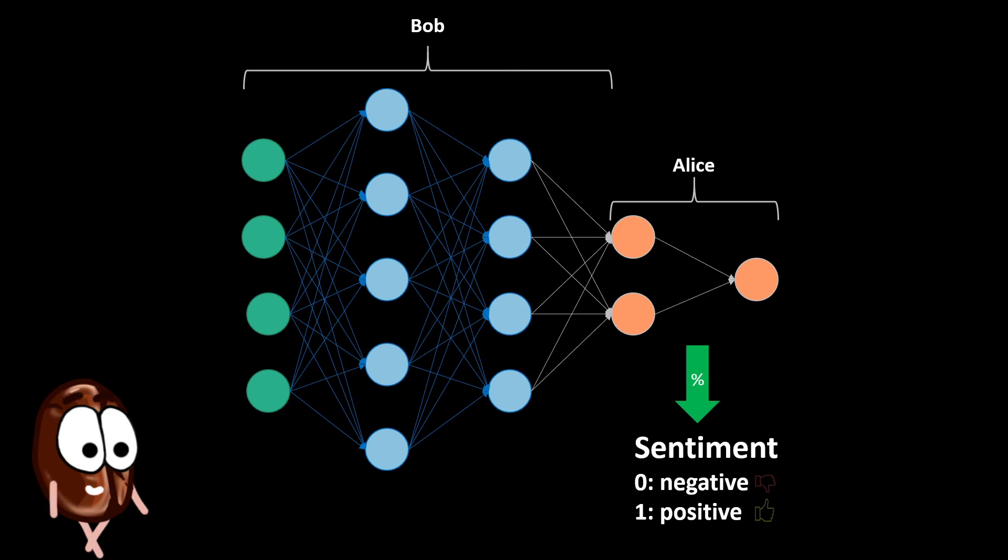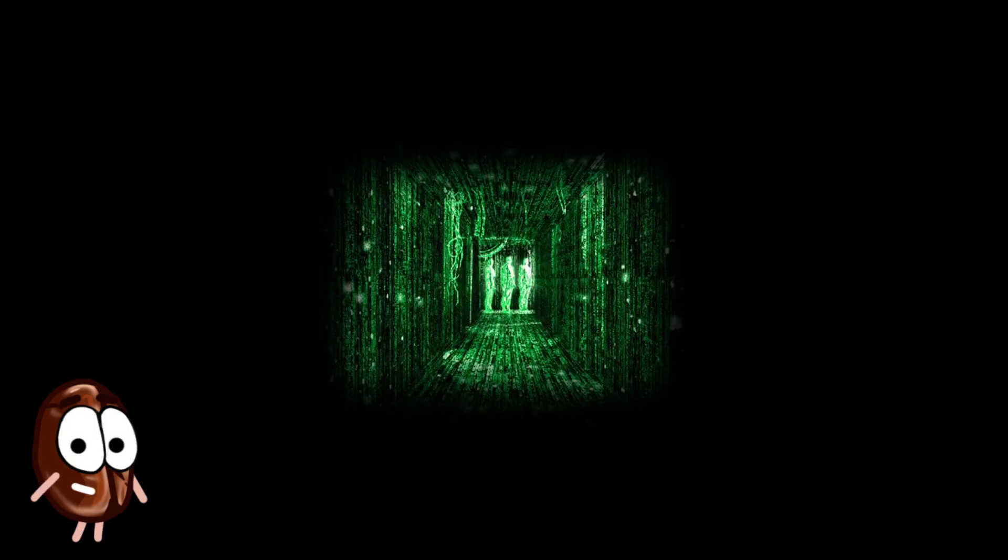But instead of measuring only the capability of Bob and Alice cooperatively getting to the right answer, we're now additionally measuring how well Bob could send the message in a short, compressed form, for which we would assume he had to understand more and see patterns in the world.